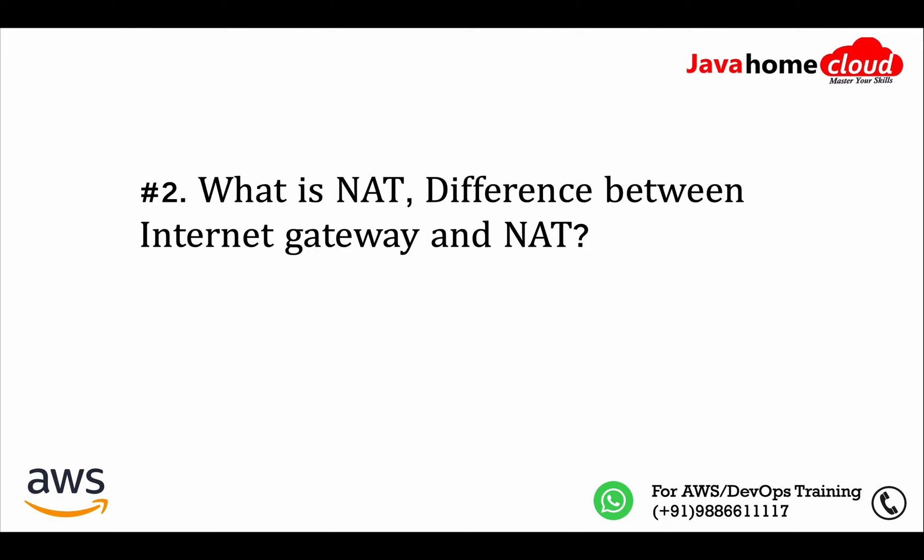NAT allows only outbound internet connections — it won't give inbound access. If someone from the internet wants to connect to our private EC2 instances in a private subnet, NAT doesn't allow that. Coming to Internet Gateway: it also provides internet access, but it supports both inbound and outbound internet connections. Internet Gateways are typically used in public subnets, so instances in public subnets with a public IP or Elastic IP can access the internet, and vice versa — people from the internet can also reach those EC2 instances.